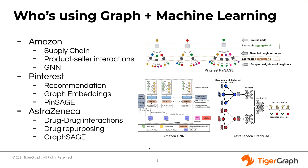Let's talk about how graph machine learning is used in the real world and what some of those use cases are. First, Amazon is using graph neural networks for demand forecasting. Amazon has many different sellers who sell different products, and buyers who are buying different things and focusing on different trends at different points in time. Amazon wants to know how much of certain products to stock to meet future demands, so they need to understand their customers, what they're ordering, what trends those products fit into, as well as their sellers and what products they supply. Amazon was able to create a graph neural network that gave them about a 16% improvement in their ability to forecast demand for products.